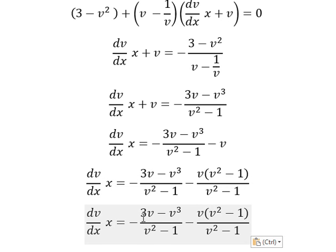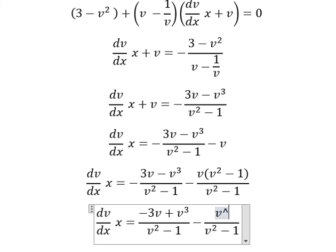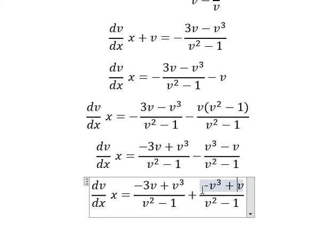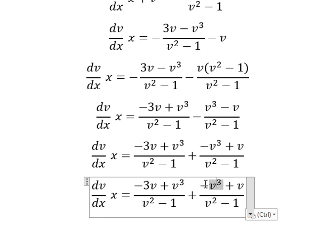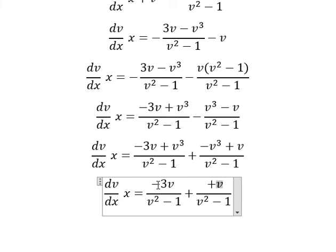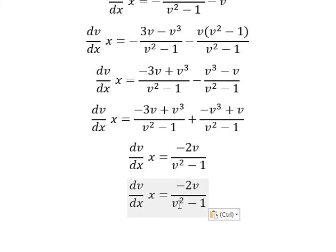The negative will change the sign here. So the negative changes the sign of this term. We simplify: plus v minus 3v gives us negative 2v. Now I will put v squared minus 1 and 2v on the left, and x and dx on the right.